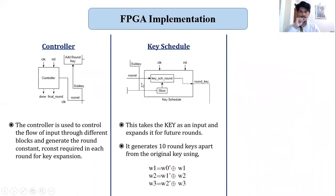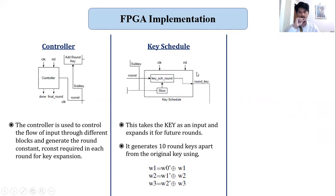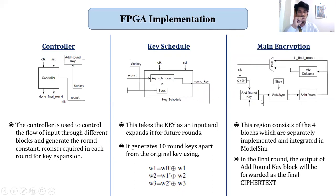This round constant is fed back to the key schedule block for generating the round key. The key schedule takes the key as an input and expands it for future rounds. It generates 10 round keys in 10 rounds apart from the original key using equations where w1, w2, w3 are the columns for the current round and the primed values are the columns for the next round. This round key is fed back to the key schedule and also forwarded as an input to the AddRoundKey block of the main encryption block. The main encryption block consists of four blocks separately implemented as models and integrated as final entities in the code. In the final round, MixColumns is skipped and the output of AddRoundKey is forwarded as the final ciphertext.